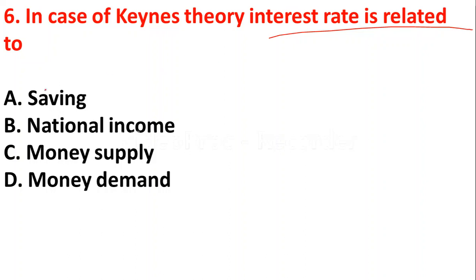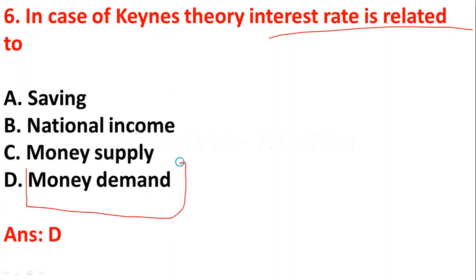The next question: in Keynes' theory, interest rate is related to — option A: saving, option B: national income, option C: money supply, option D: money demand. In Keynes' theory, interest rate is related to money demand, so option D is the correct answer.